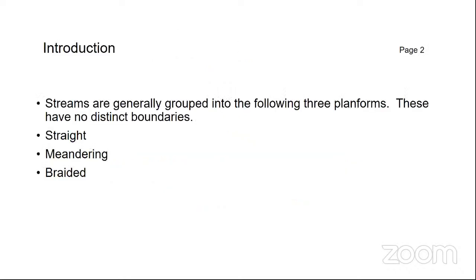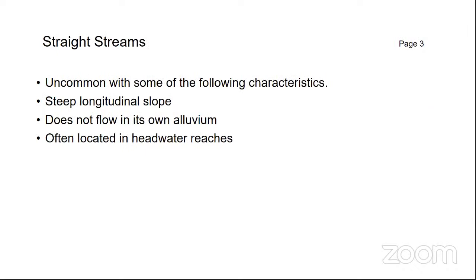I'm really going to talk about braided rivers, but we'll start with the basics. Streams are generally classified into three groups: straight streams, meandering streams, and braided streams. These don't have any distinct boundaries — they're just groups with roughly similar characteristics. Straight streams are very uncommon. They might be straight if they have a steep longitudinal slope, or if they do not flow in their own alluvium.